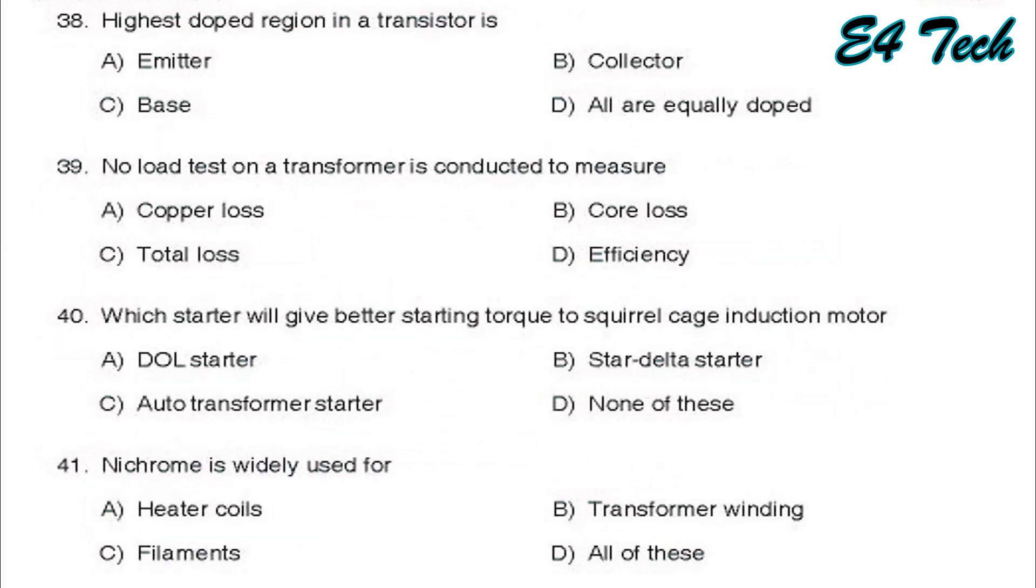Next, highest doped region in a transistor. Highest doped region will always be emitter. That is option A, emitter. Next, no load test on transformer is conducted in order to measure core loss. That is option B, core loss.